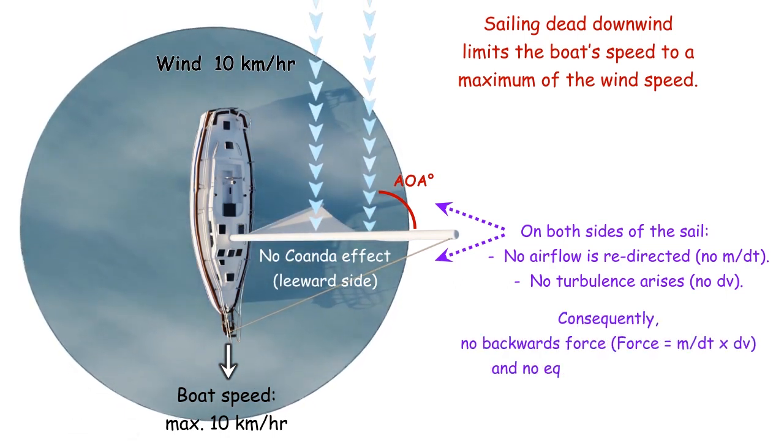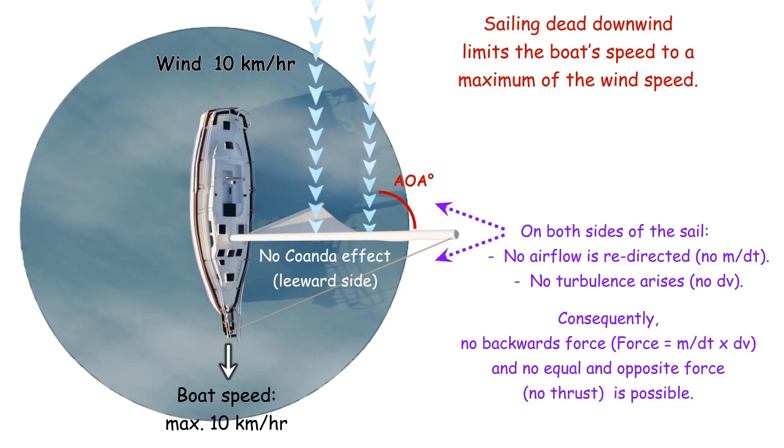Consequently, no turbulence is created, so no backwards force arises, and therefore no thrust is generated to push the boat faster than the wind. The wind simply pushes the boat downwind. As a result, the boat cannot sail faster than the wind.